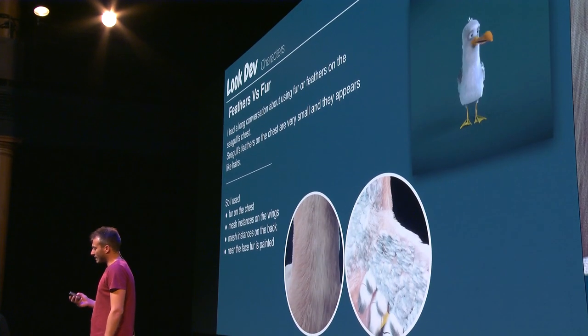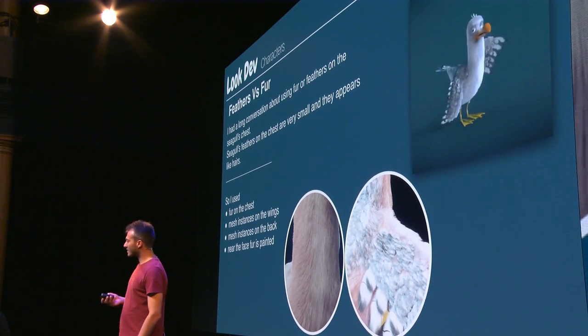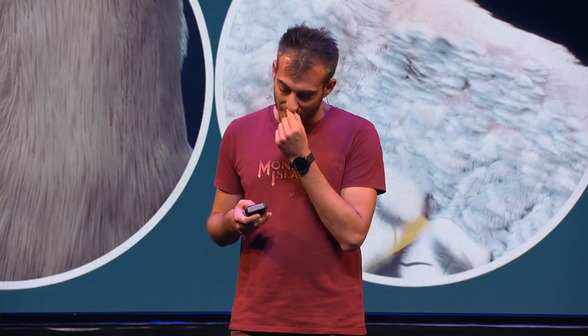A funny thing: we had a long conversation on Blender Artists about fur or feathers on the chest. The seagull had little feathers on the chest. In the end, I decided to use fur on the chest, on the back, on the wings — feathers. I don't know if it was the best way for the look, but it was useful to have fur on the chest because it was more comfortable.